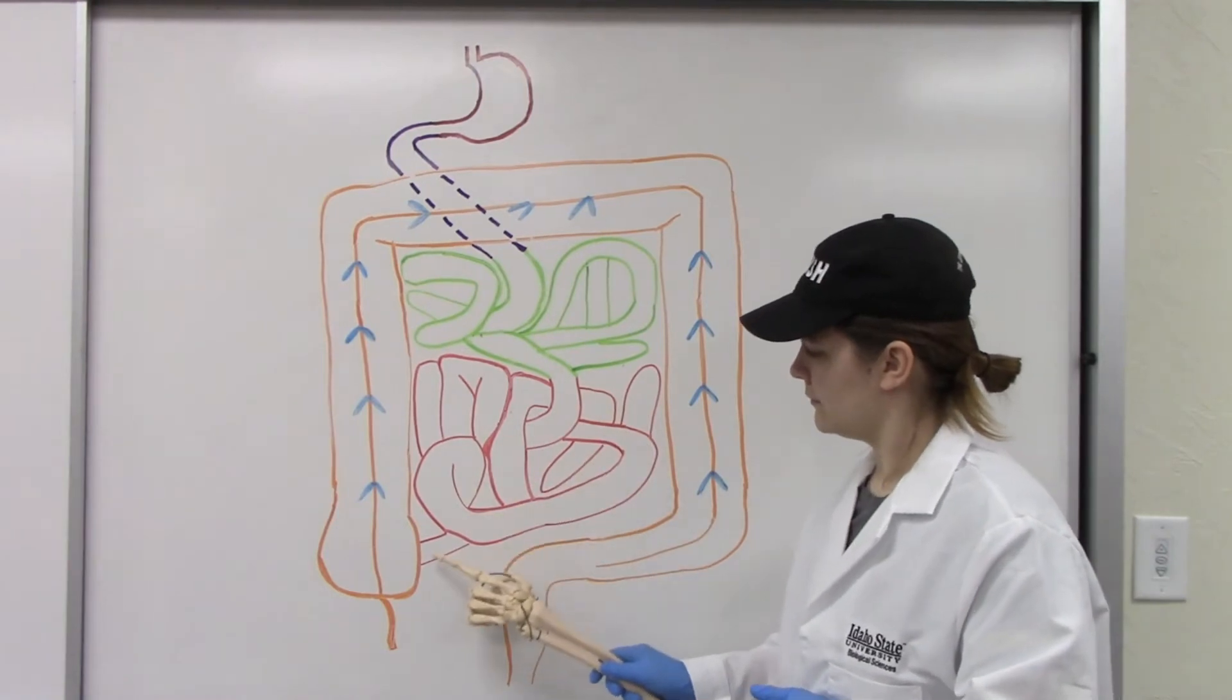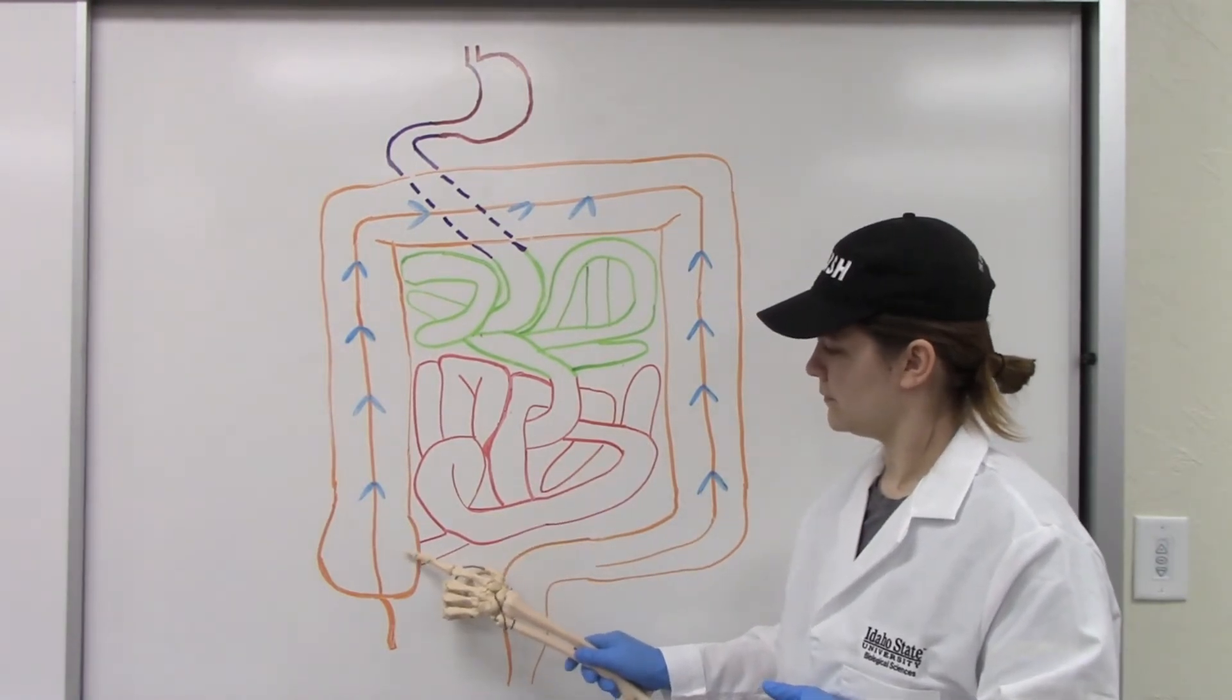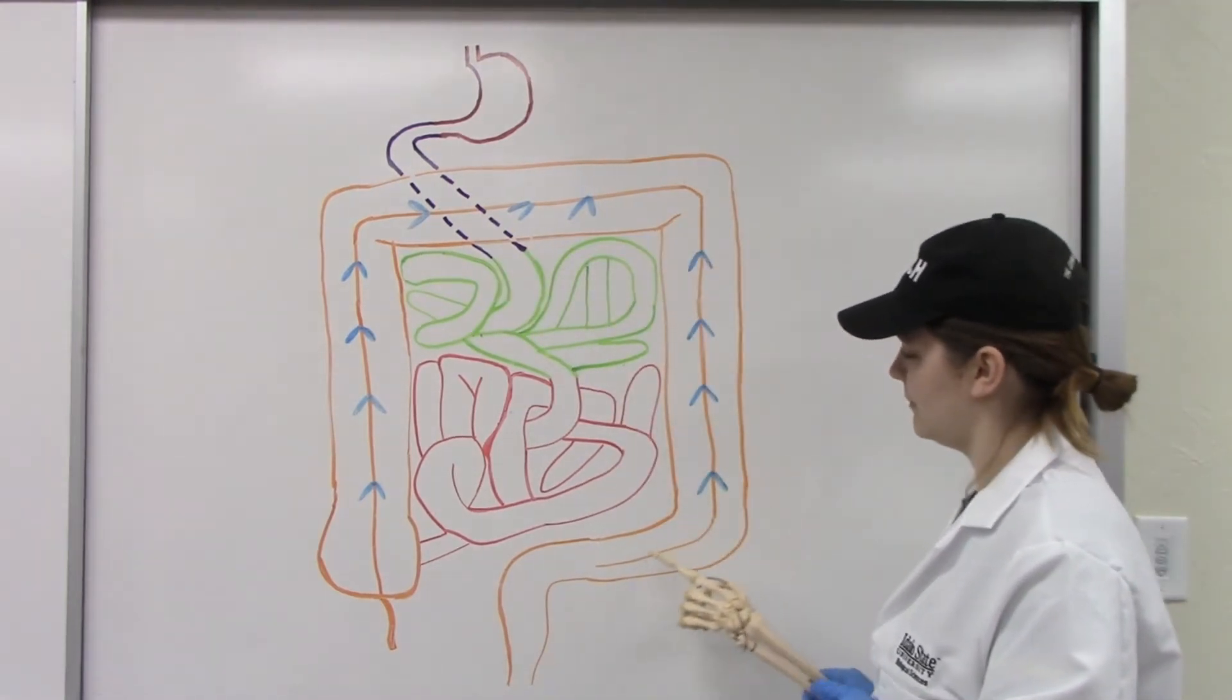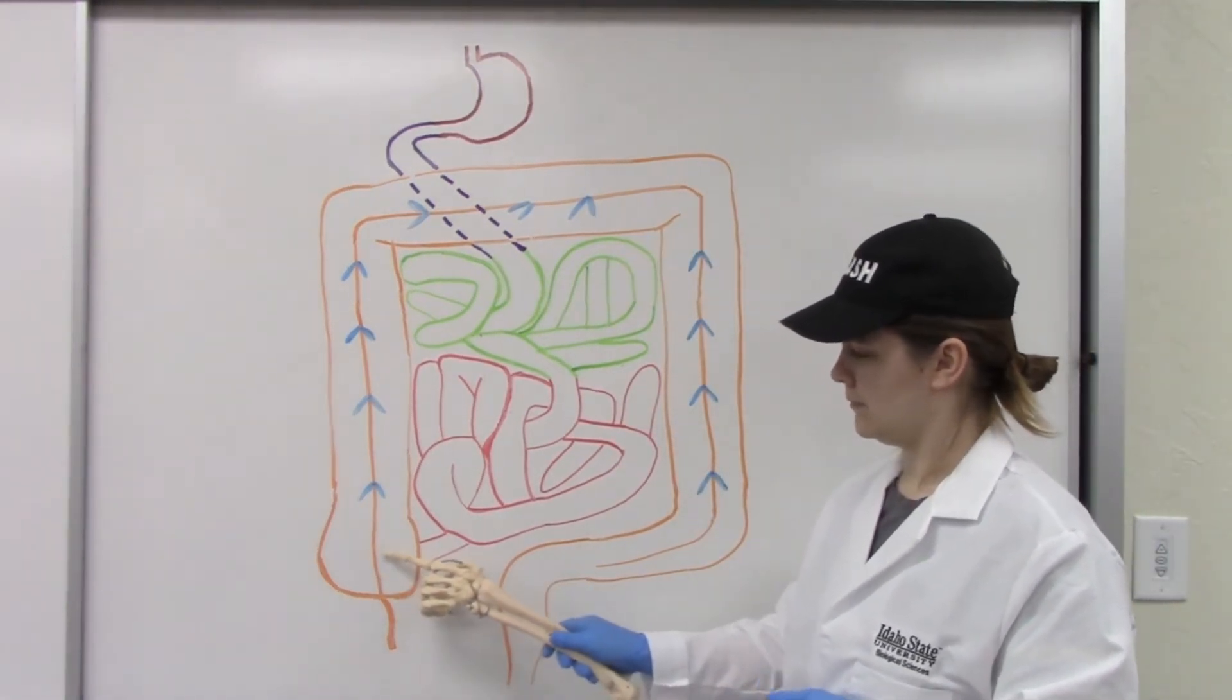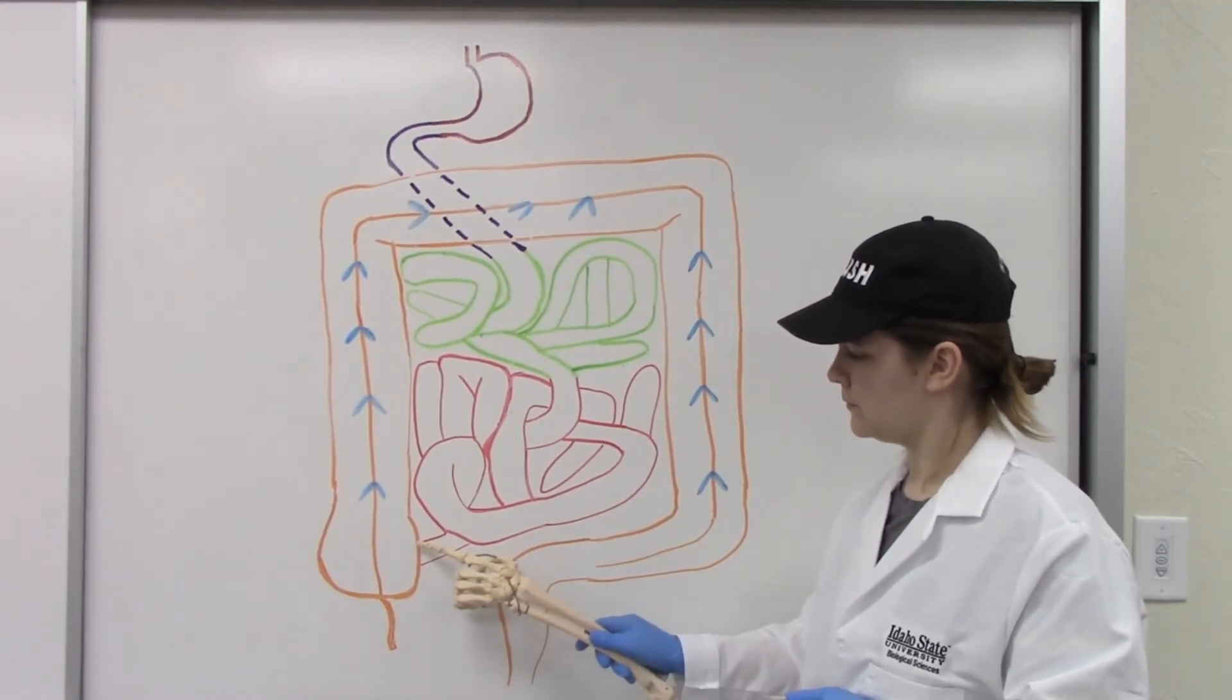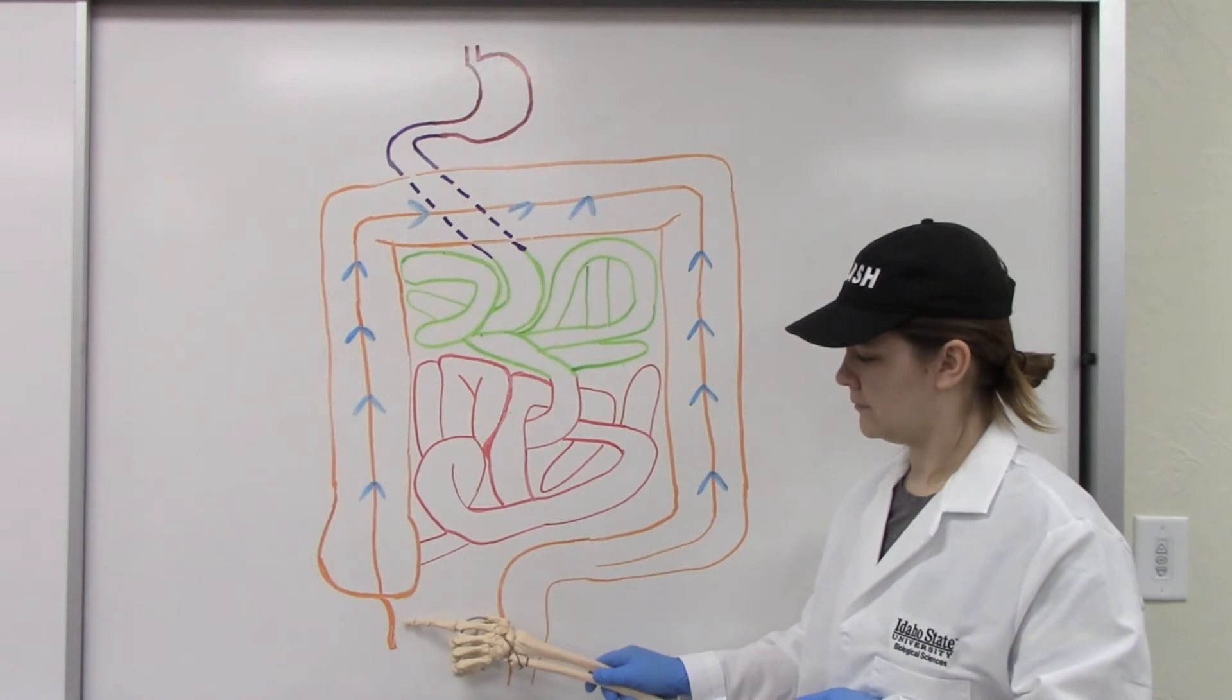Now, we have arrived at the large intestine. We can make a box with the large intestine. The first portion of the large intestine is this pouch-like widening referred to as the cecum. Off of the cecum is the vermiform appendix.